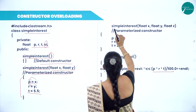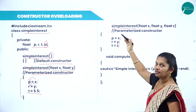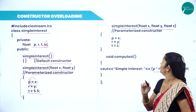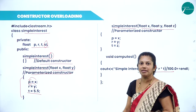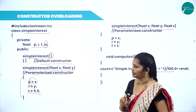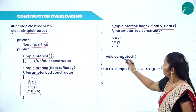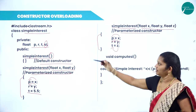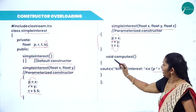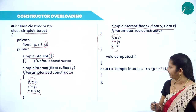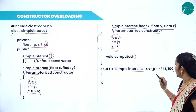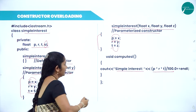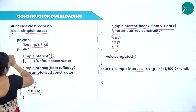The third function is 'SimpleInterest(float x, float y, float z)' — a parameterized constructor with three arguments — where x goes to p, y to r, and z to t. Then there is a regular member function 'void computeSimpleInterest()' which calculates si = p * t * r / 100. Finally, the class is closed with a flower bracket and semicolon. Totally there are four functions: default constructor, two parameterized constructors, and one regular member function.